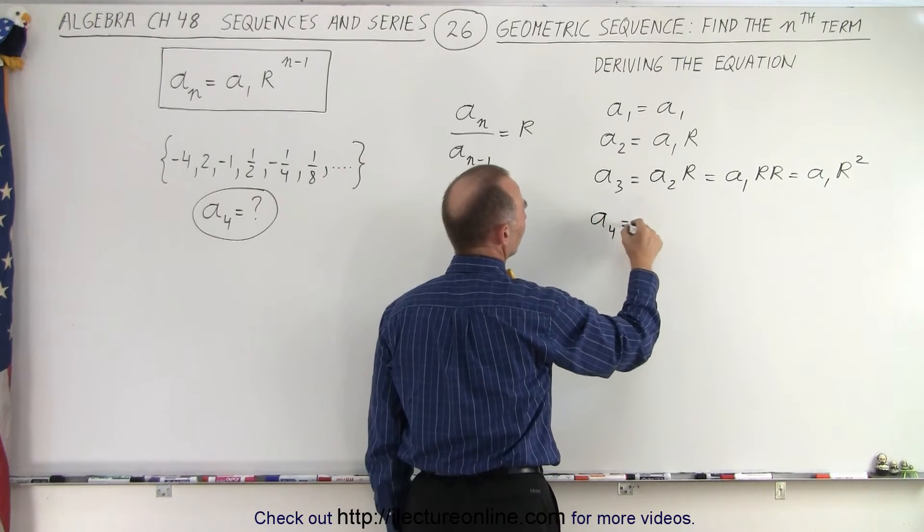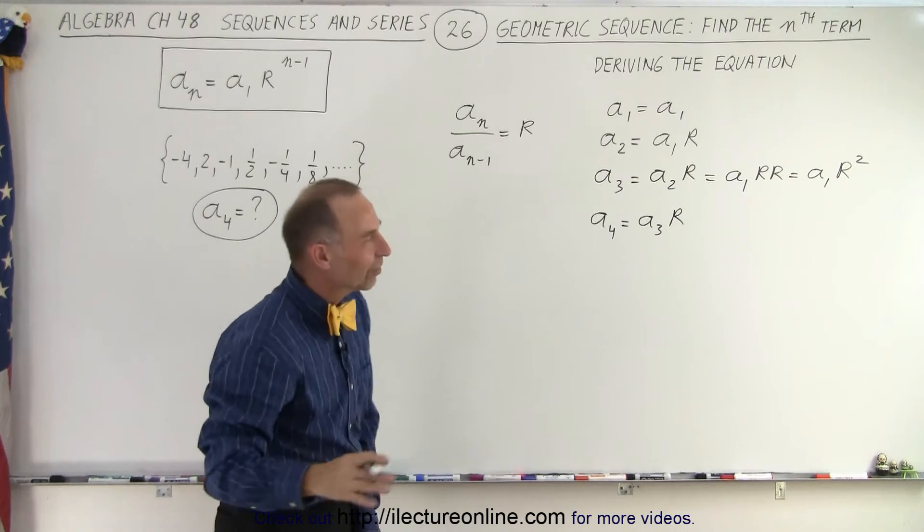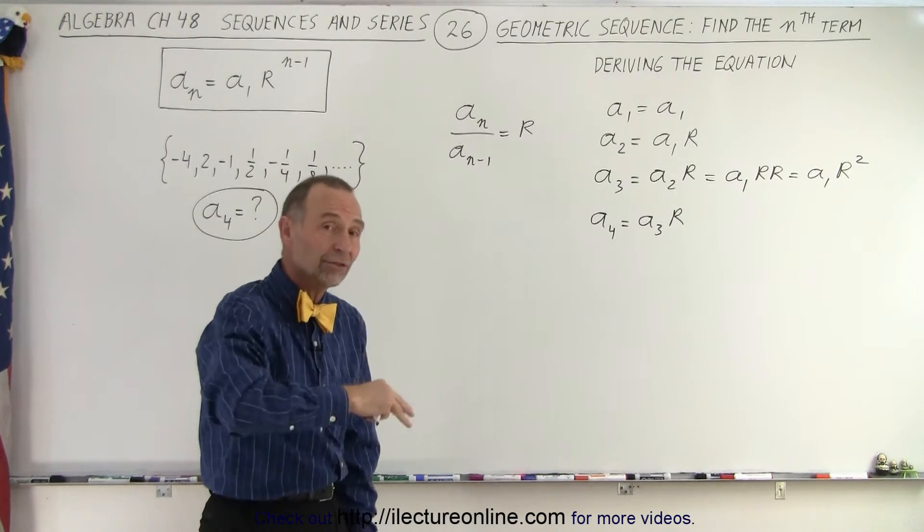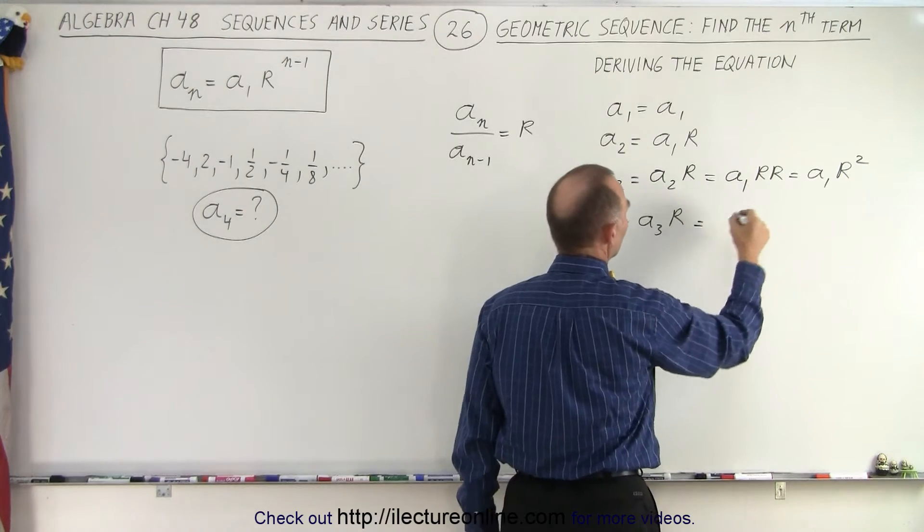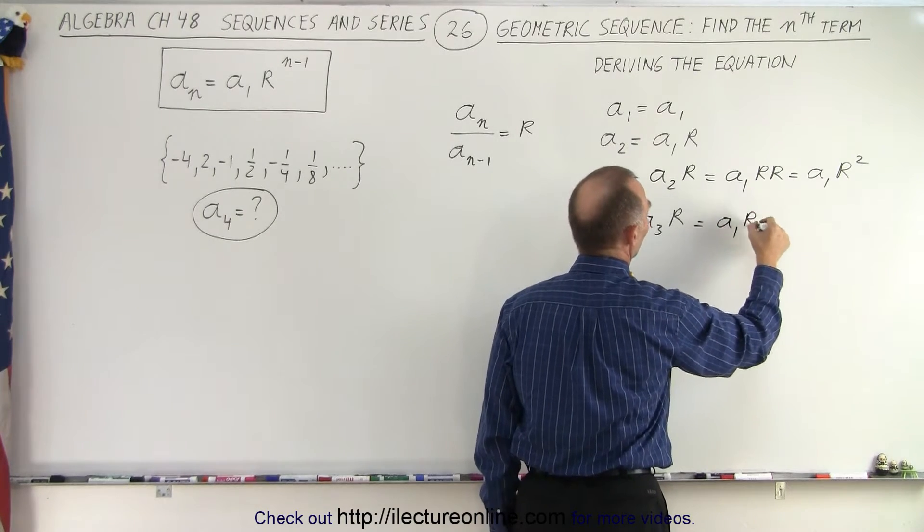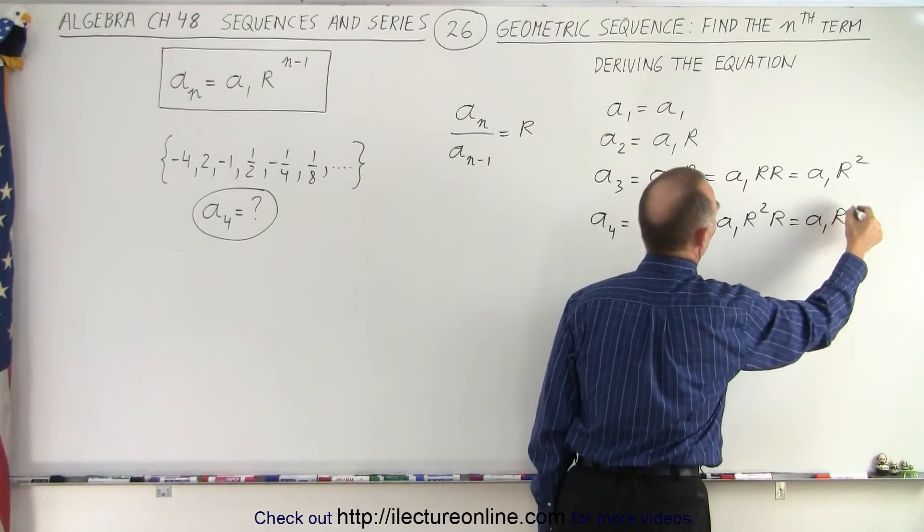Then a_4 is going to be equal to a_3 times the common ratio r, and you begin to see the pattern. It's always the previous term times the common ratio. So this is going to be equal to a_1 times r squared times r, which is a_1 times r cubed.